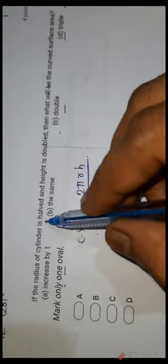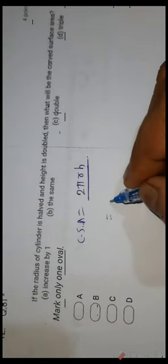Question number 61: if the radius of a cylinder is halved and height is doubled, what happens to the curved surface area? CSA = 2πrh. New CSA = 2π(r/2)(2h) = 2πrh. The 2s cancel, so the curved surface area remains the same. B is the correct answer.